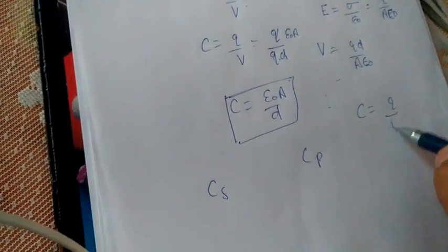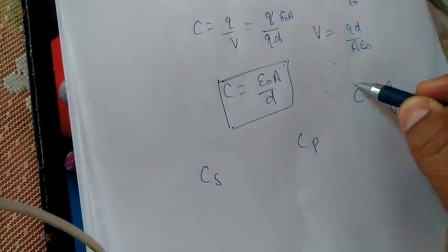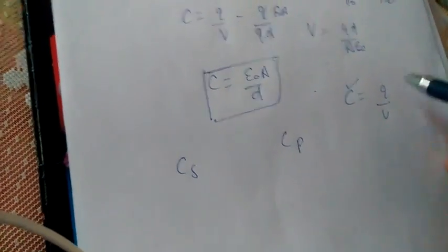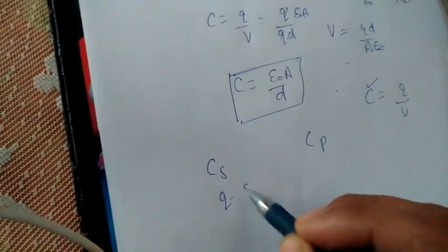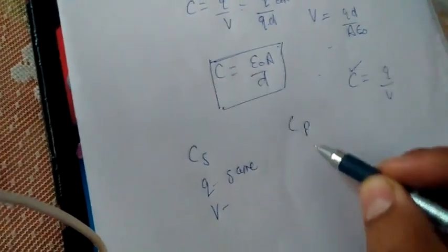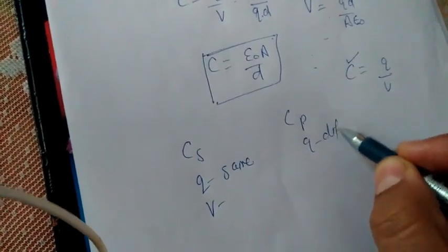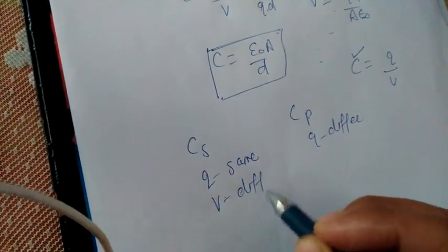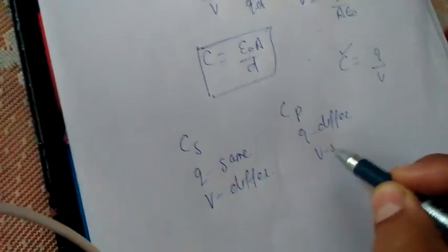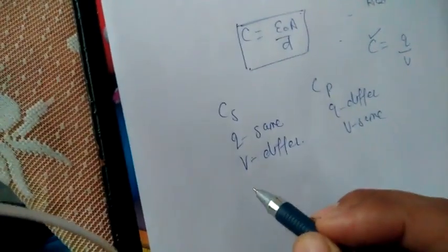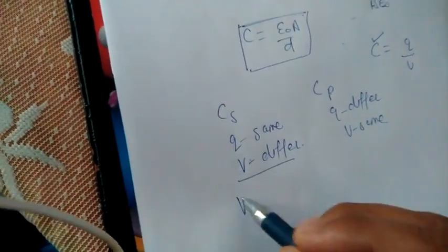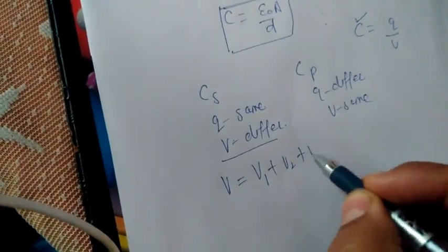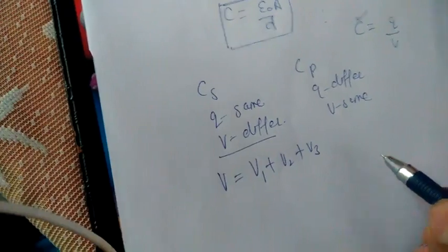As we know that capacitors are different, we have different capacitors. Therefore, in series, charge is the same and potential is different. In parallel, charge is different and potential is same. Therefore, for series combination, potential is different. Total potential will be V1 plus V2 plus V3.